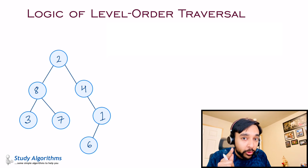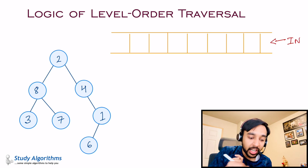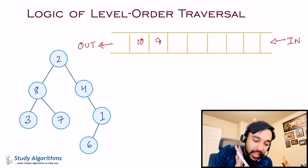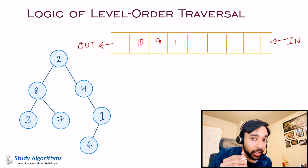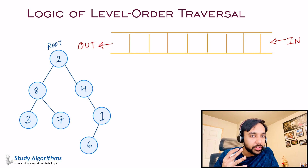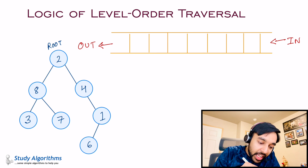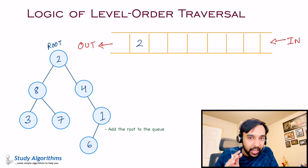Let's say I have a queue. All elements go in from one side and come out the other side. If I add elements in order 10, 9, and 1, then they are processed in the same order — 10 first, then 9, then 1. We are going to take advantage of this fact. For any tree, the root is the entry point. In this tree, 2 is your root, so this looks like a good starting point. I would take this 2 and add it to my queue. My queue now has element 2 in it.